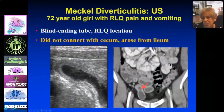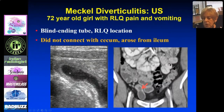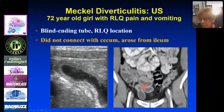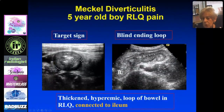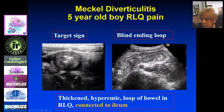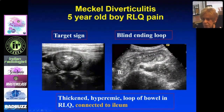Here is a 12-year-old girl with right lower quadrant pain and vomiting. It's blind ending, but when you trace it back, it came from the ileum — we did a CT to confirm. Here is the cecum, and this is the diverticulum coming from the ileum. Here's another one showing the target sign — this is a blind ending tube coming from the ileum. So when you see a blind ending tube, even if it looks like the appendix, trace it back and make sure it comes from the cecum.